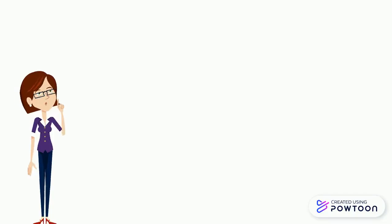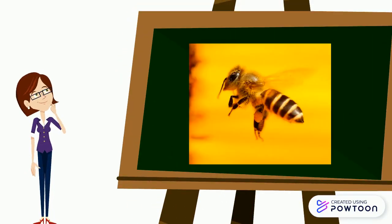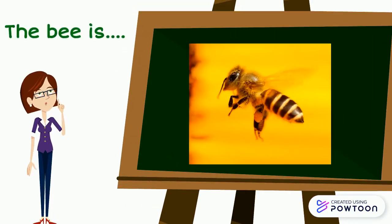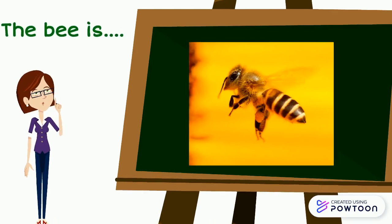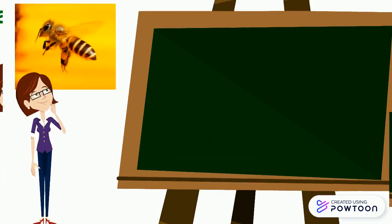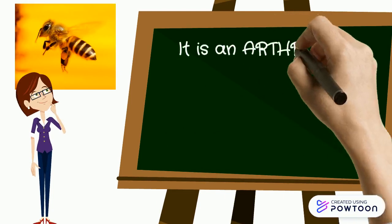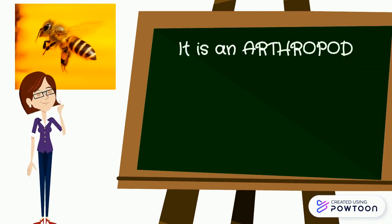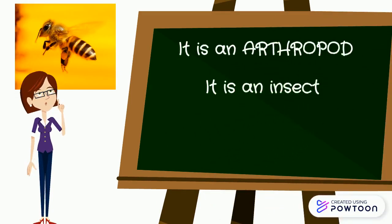Okay, let's practice a little bit. What about the bee? What do you think? What kind of invertebrate is it? The bee is an insect and it has got an exoskeleton.